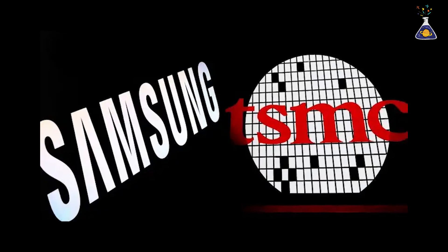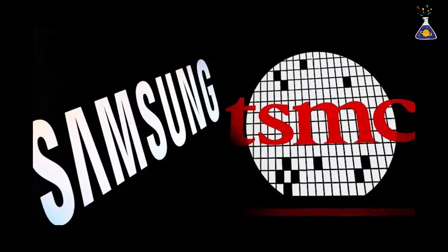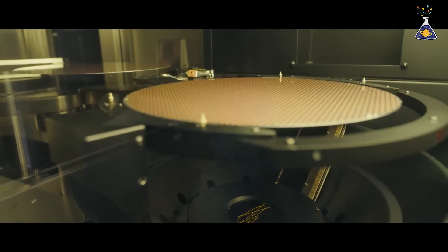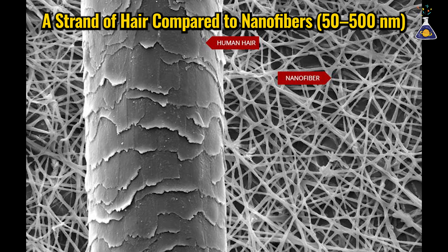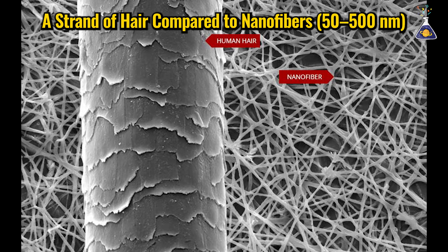Leading companies like TSMC and Samsung Electronics are still pushing transistor density to the extreme. One nanometer is just one hundred thousandth the thickness of a human hair. It's nothing short of an engineering marvel.